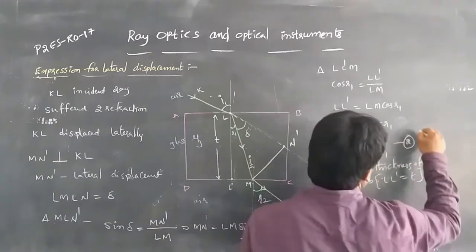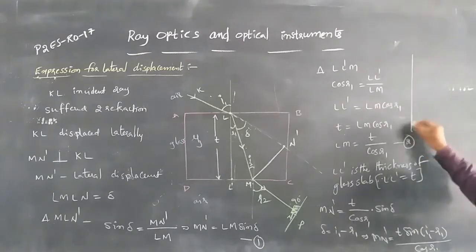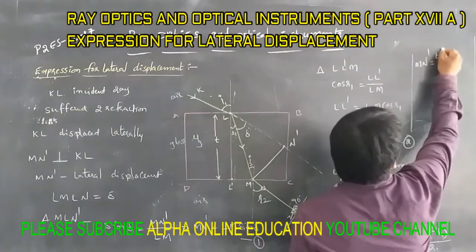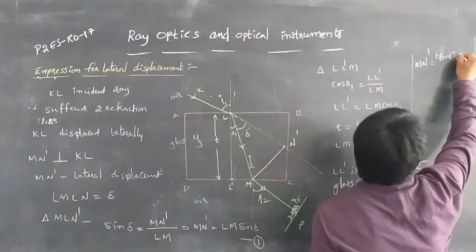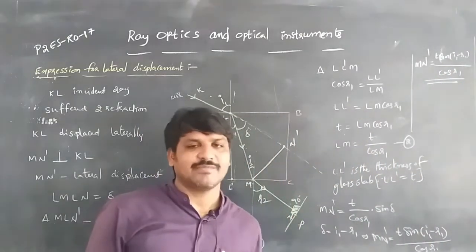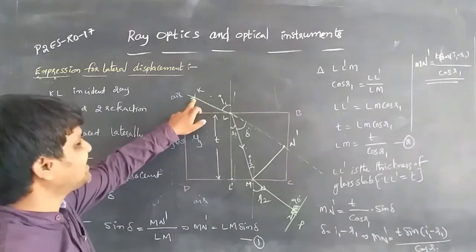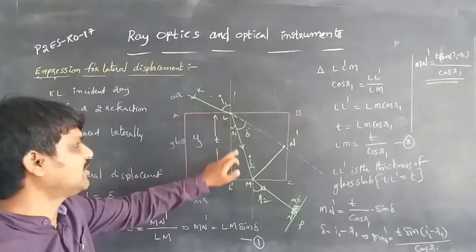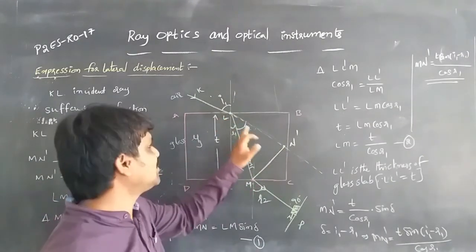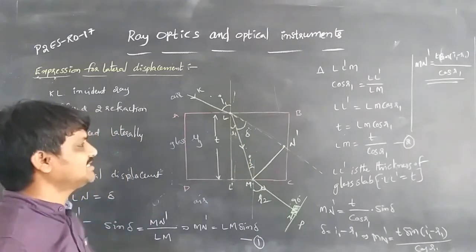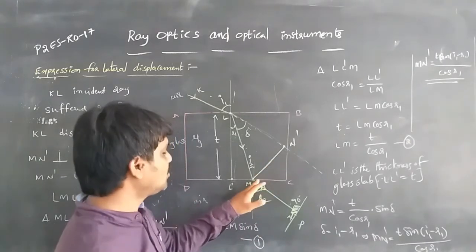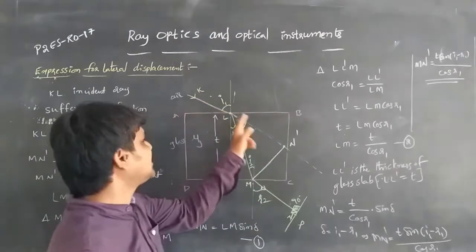This is the equation for lateral displacement MN dash: MN dash equals T·sin(I1 − R1) / cosR1. When the light ray is incident on the glass slab, it undergoes two refractions at points L and M. Before refraction, this is the actual path of the incident ray, and due to the two refractions, the incident ray is displaced — this displacement is called lateral displacement. MN is perpendicular to the incident ray KL.